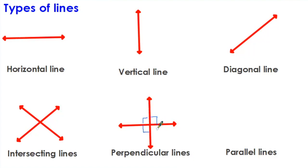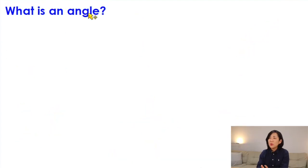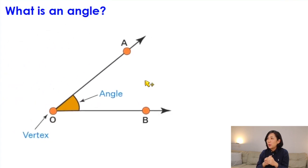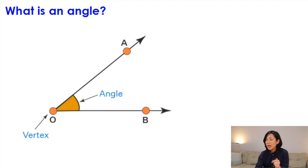Finally, parallel lines are the opposite of intersecting lines — we have two lines, and if you extend them forever, they never meet. These are parallel lines, and parallel lines are very important for this topic. Now let's talk about what an angle is. An angle is formed when two rays are joined at an end point — you can see the vertex at the end of the rays, and between the two rays you can see the angle.